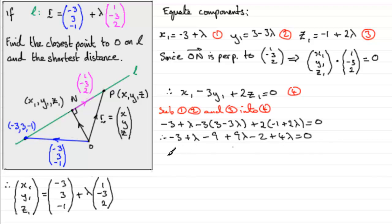So now if we group up the terms, we end up with -3 minus 9 minus 2, well that's going to be -14, and then lambda plus 9 lambda is 10 lambda, and plus another 4 lambda is 14 lambda, and that equals 0. Add 14 to both sides, we end up with 14 lambda equals 14, and divide both sides by 14, and you get lambda equals 1.